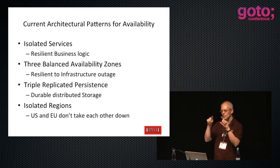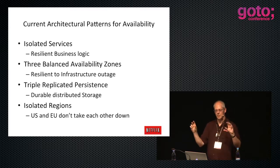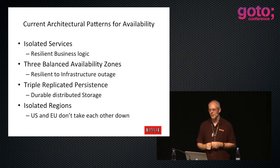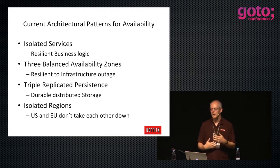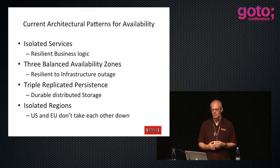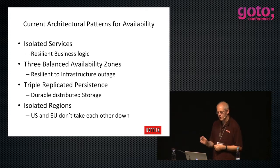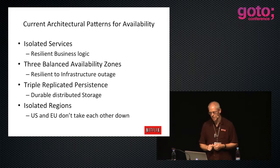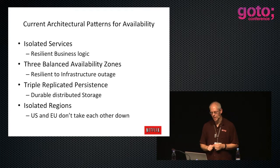I have to do something sensible when a service is down. The home page has lots of different rows - one row is a 'similars' row. If the similar service is down, you don't get those rows; you get normal genres or some other rows. It gradually falls back to a less and less personalized experience - gradual degradation that you can't really see unless you know exactly what it's supposed to look like. We also put everything in three balanced availability zones and triple replicate all our persistence.